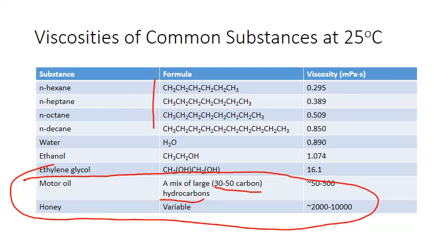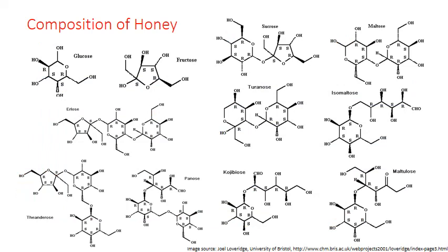Honey has a huge viscosity. It's made up of a complex mixture of mostly carbohydrate sugar molecules. Notice the complexity and size of these different molecules, as well as the many polar OH groups all over them. It's this combination of molecular size and intermolecular force strength from those polar OH interactions that gives honey its high viscosity.